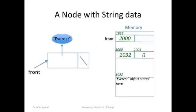This will become clearer when we look at the memory representation of this linked list. The front of the linked list is at the address 1956 which holds the address 2000, the location of the Everest node.